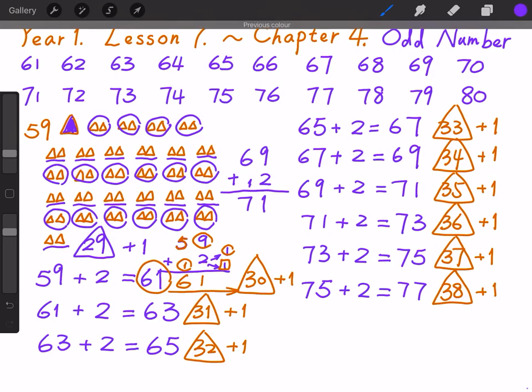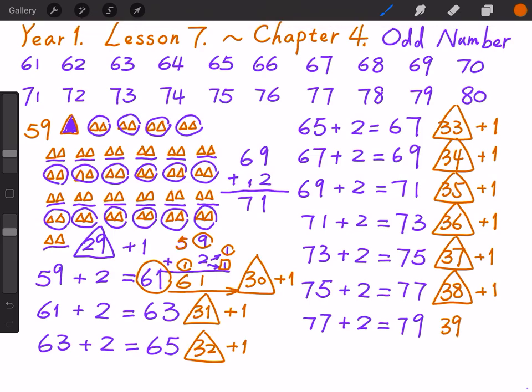Seventy-five plus one more group of two equals to seventy-seven. So seventy-seven should have thirty-eight groups of two plus one. Seventy-seven plus one more group of two equals to seventy-nine. So seventy-nine should have thirty-nine groups of two plus one.